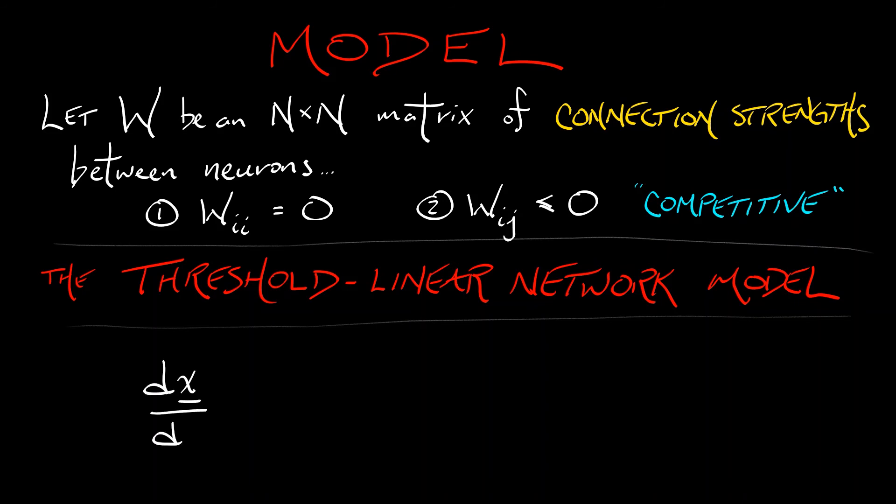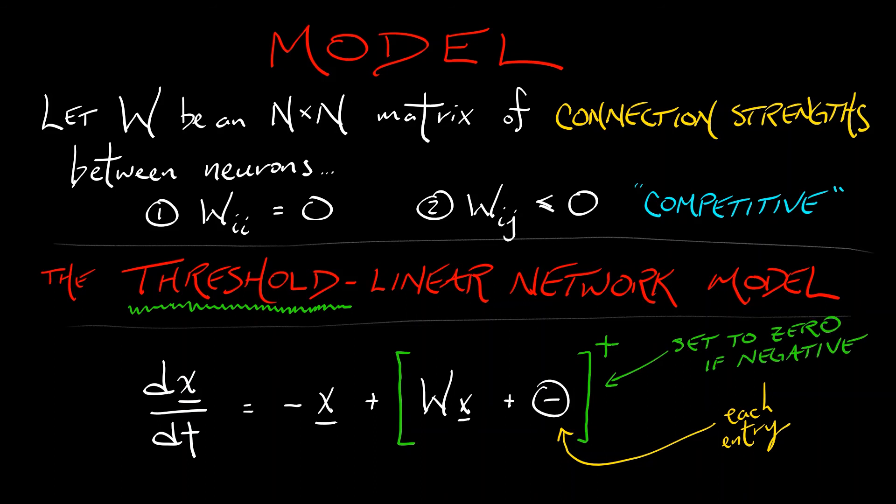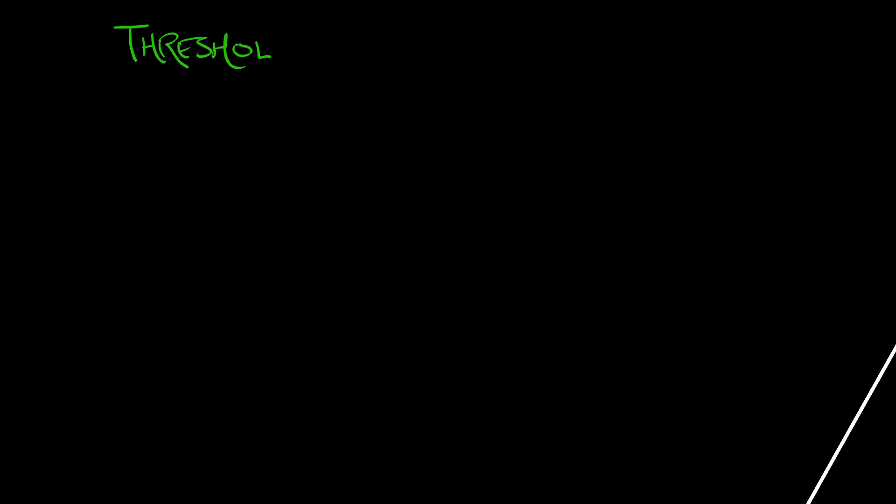The name of the model that we're going to consider is called the threshold linear network model. Here's the setup: dx/dt equals minus x, just like before. But then we're adding the influence that one neuron has on another through Wx. We're using that matrix W as a linear operator, and then we add the activation strength theta. Now as is, this is kind of boring. This is just an affine system. So what we're going to do is threshold that term Wx plus theta. What that means is each entry is set equal to zero if it winds up being negative. So it can have a positive influence or it can have no influence at all. It cannot have a negative influence.